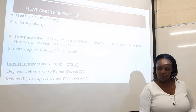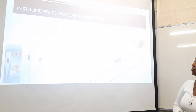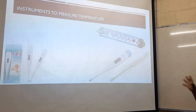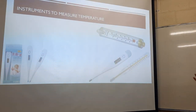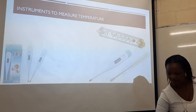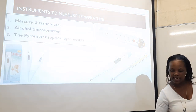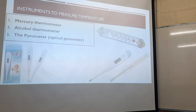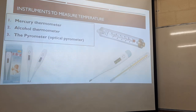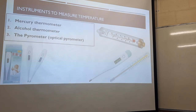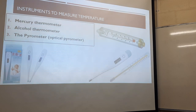We need to look at instruments used to measure temperature. As you might already know, these are thermometers. There are three instruments we're going to look at: the mercury thermometer, the alcohol thermometer, as well as the optical pyrometer. The first two are basically the same thing — what we call a clinical thermometer. A mercury thermometer will have mercury inside, and an alcohol thermometer will have alcohol inside, but they are both the same in structure.